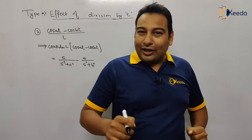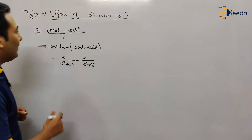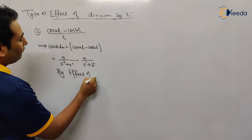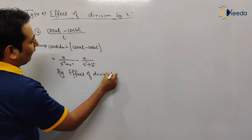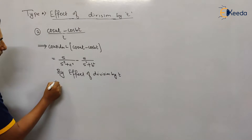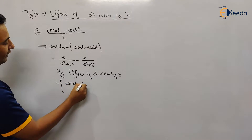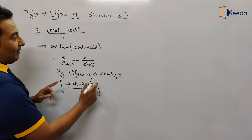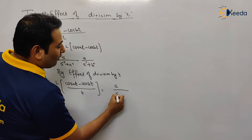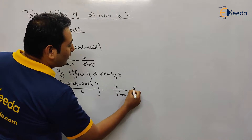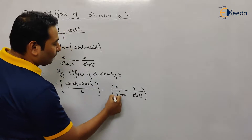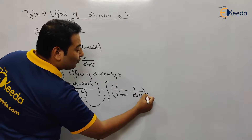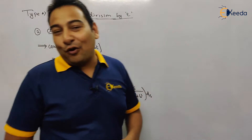Now you must remember the property back. By the effect of division by t, the Laplace of (cos(at) - cos(bt)) / t equals the Laplace of (cos(at) - cos(bt)) — which is s/(s²+a²) minus s/(s²+b²) — and due to this division by t, we integrate it from s to infinity.